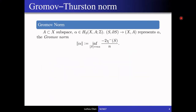The stable commutator length is also closely related to the Gromov-Thurston norm. The setup is: let A be a subspace of X, possibly empty, and let alpha be a second relative homology class. Such a homology class is represented by singular surfaces in X with boundary lying inside A. The Gromov-Thurston norm of alpha is defined by taking the infimum complexity of these surfaces representing a multiple of alpha. This is equivalent to a definition counting the minimal number of triangles in any cycle representing the homology class alpha.